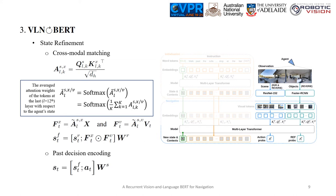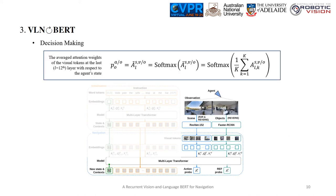We further refine the state representation with the weighted vision language inputs and the action which the agent has made. Lastly, we directly apply the average attention weights of the visual tokens at the last layer with respect to the agent's state as decision probabilities to move the agent or to ground to an object.